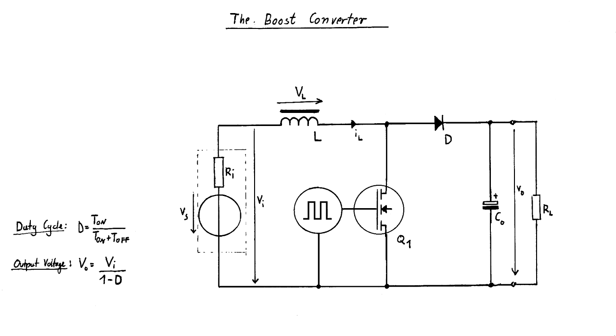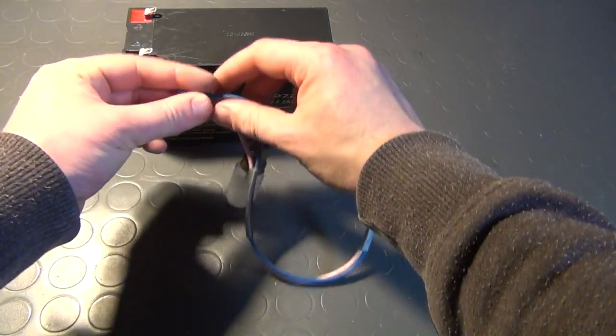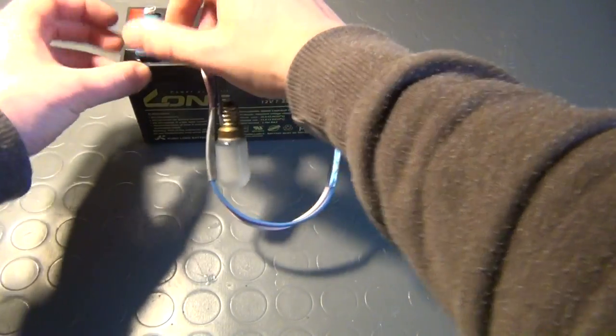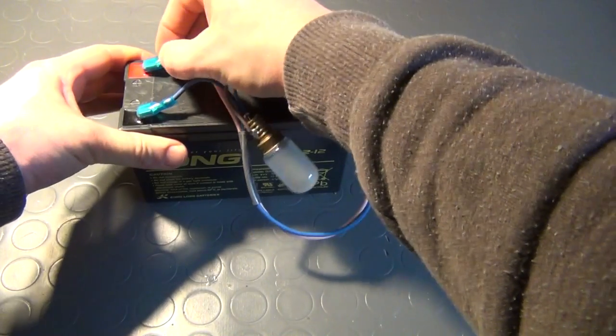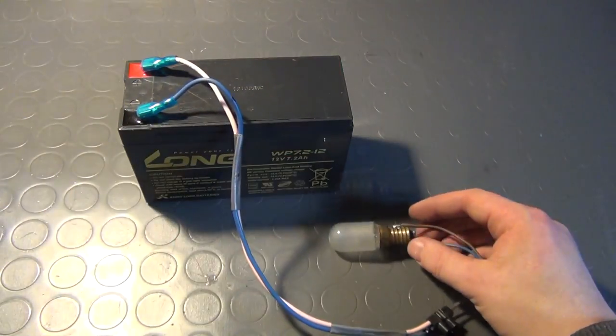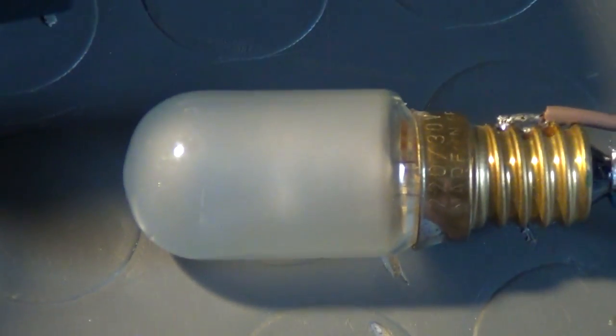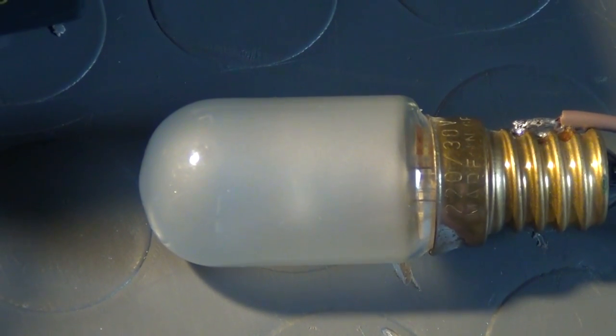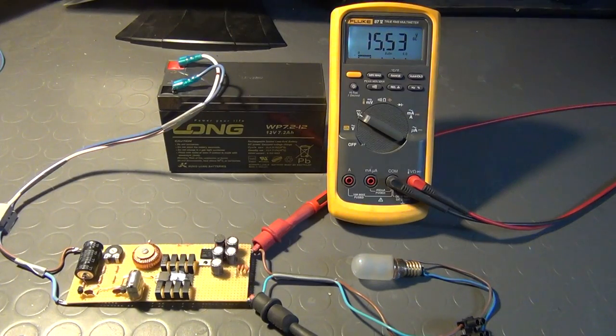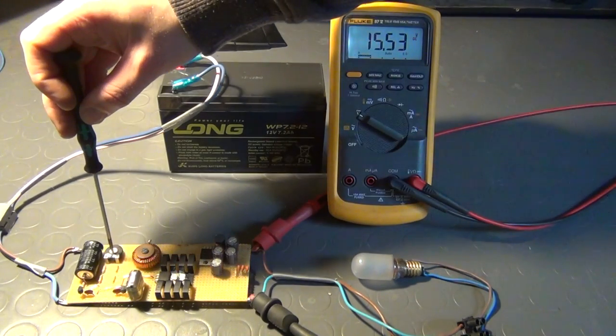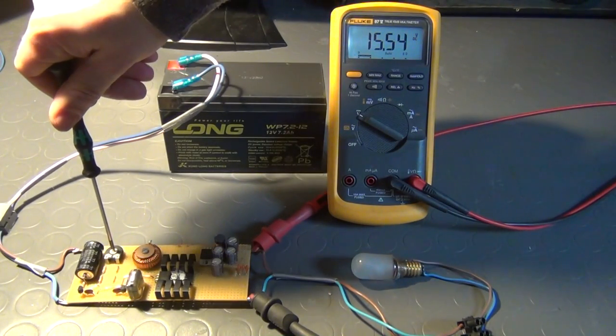To demonstrate this to you, let me show you some examples of actual real-world boost converter action. Here you see a 12V battery and a light bulb that is actually rated for 230V. Witness how you can see no light at all coming from the bulb as I attach it to the battery. Now I connect this simple boost converter circuit between the battery and the bulb.